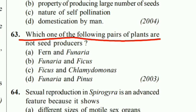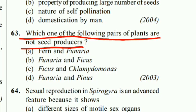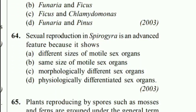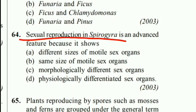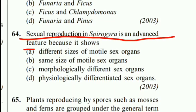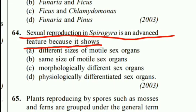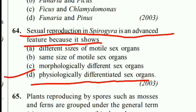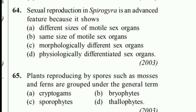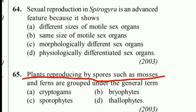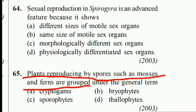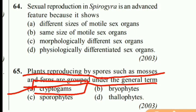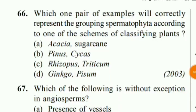Which pair of plants are not seed producers? Right answer is Fungi and Funaria. Sexual reproduction in Spirogyra is an advanced feature because it shows physiologically differentiated sex organs. Plants reproducing by spores such as mosses and ferns are grouped under the general term cryptogames.